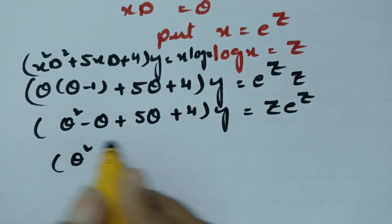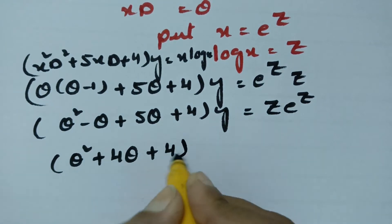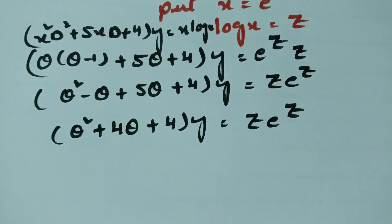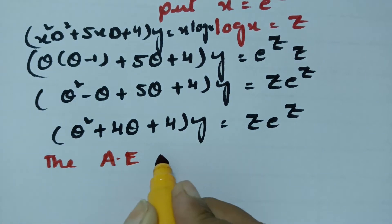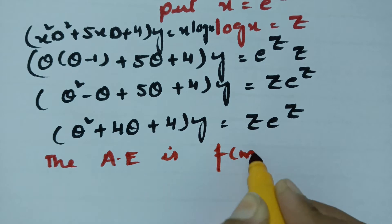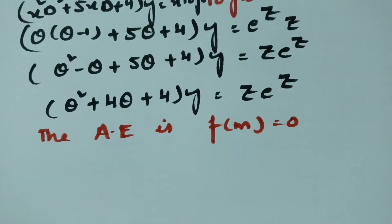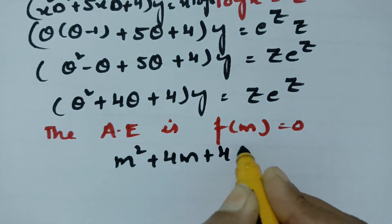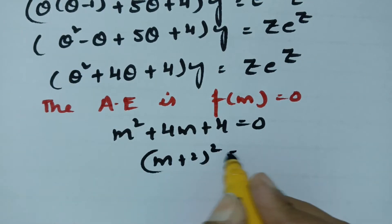Combining like terms: 5 theta minus theta gives 4 theta, so the equation is (theta squared plus 4 theta plus 4) of y equals z times e to the power z. The auxiliary equation is f(m) equals 0. Replacing theta with m gives m squared plus 4m plus 4 equals 0, which factors as (m plus 2) squared equals 0.